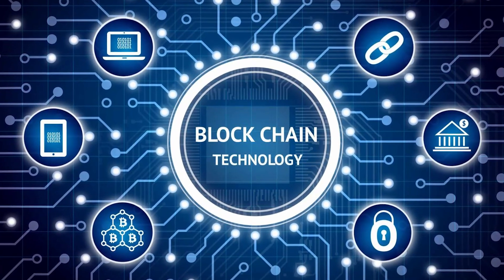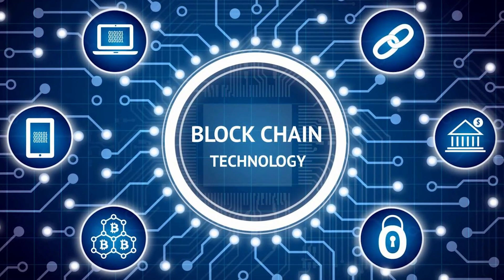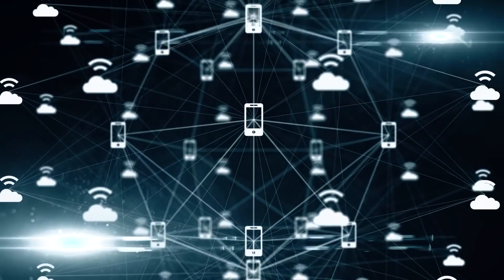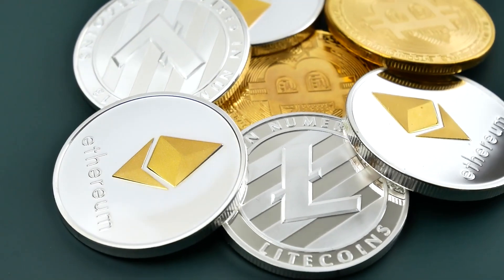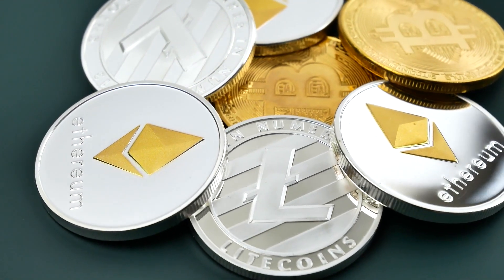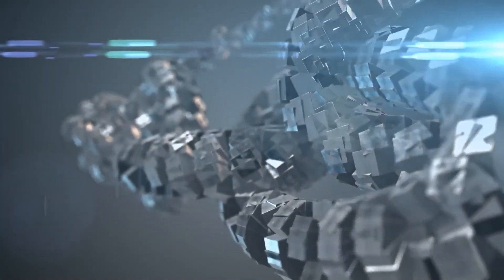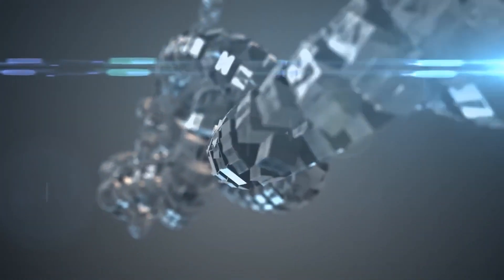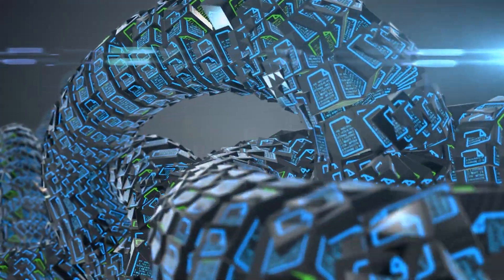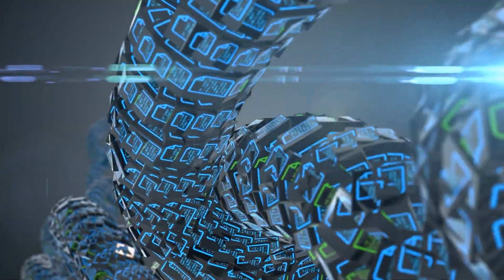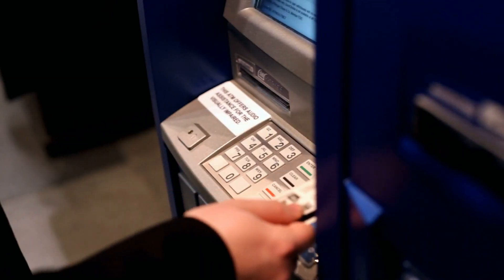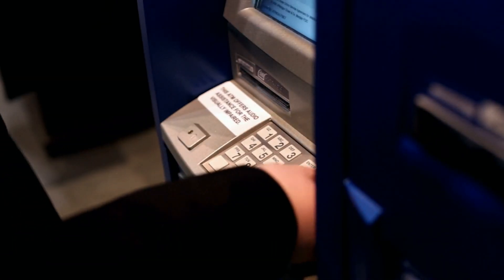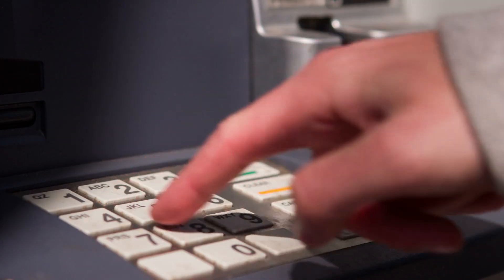A blockchain is essentially a distributed ledger — a growing list of records known as blocks — that are linked and secured using cryptography. Each block contains a cryptographic hash of the previous block, a timestamp, and transaction data. This structure makes transactions irreversible and secure.